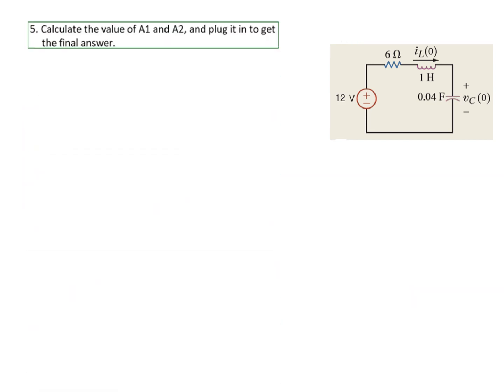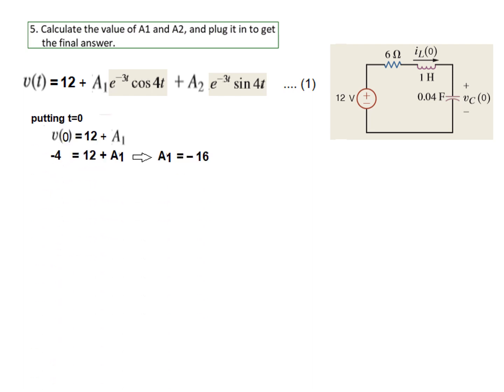We move on to the next step: calculate A1 and A2. The procedure is that in the general equation we first put T equal to 0 to get one equation. So we put T equal to 0, which gives us V(0) equals 12 plus A1. Now V(0) was given as minus 4, so we plug in that value, and from here A1 is minus 16. That is one equation found.